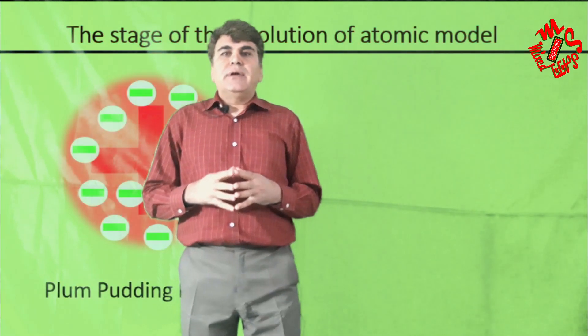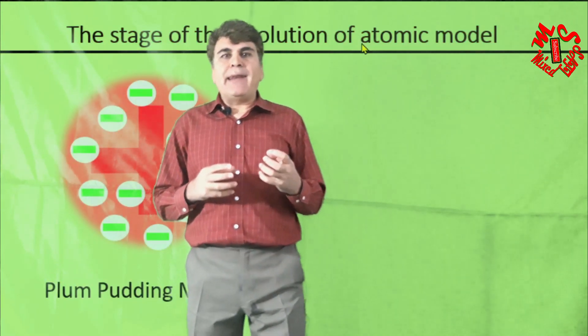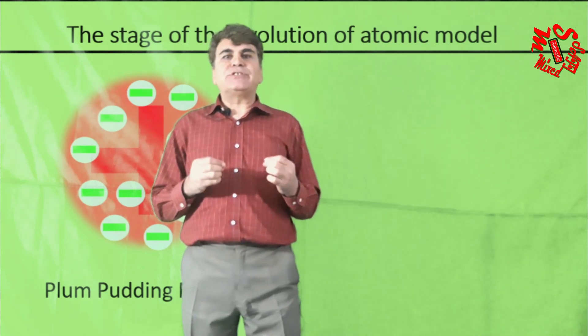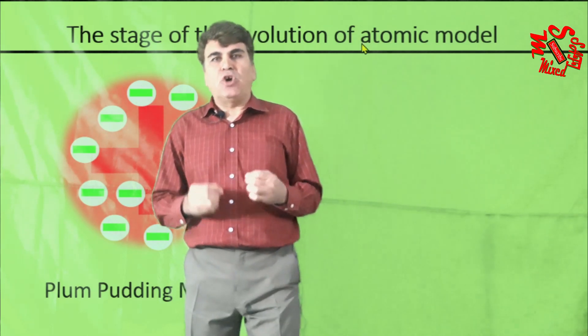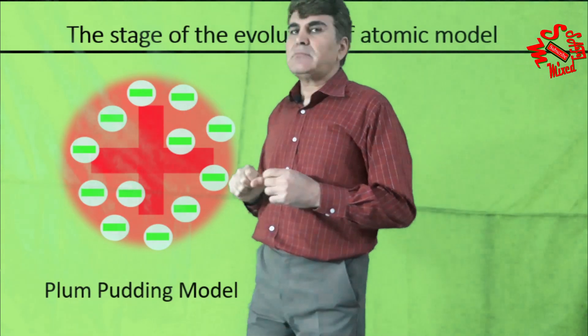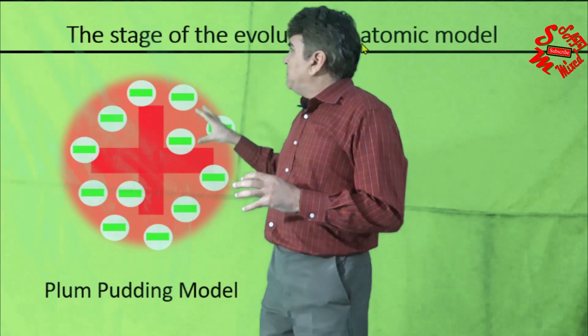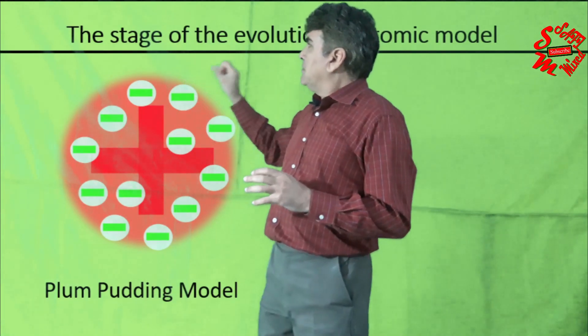In this model, the atom was considered to be made up of clouded up negative electrons that float in a soup of positive charge like the one you see over here. This is much like the plums in pudding or raisins within a fruitcake.